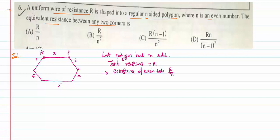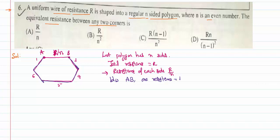If I consider these two points between which we want to calculate equivalent resistance, between those points we have one side with resistance r/n. Now look at the other part — the entire remaining portion of the polygon. Between points A and B, one side has a resistance of r/n. What is the resistance of the entire remaining part?